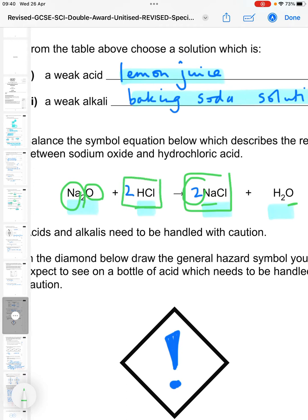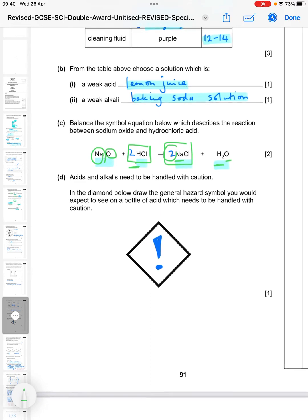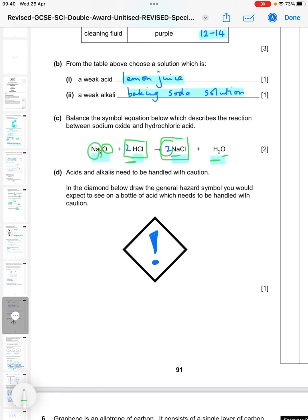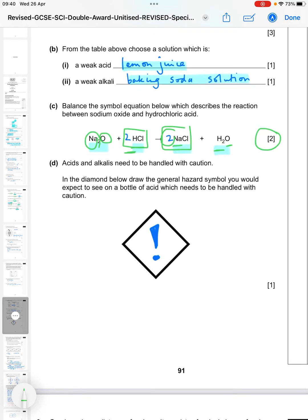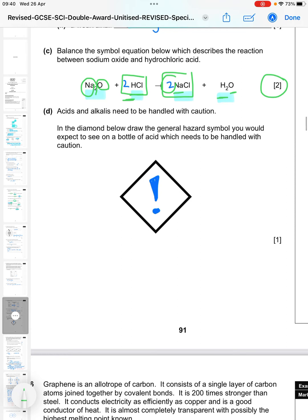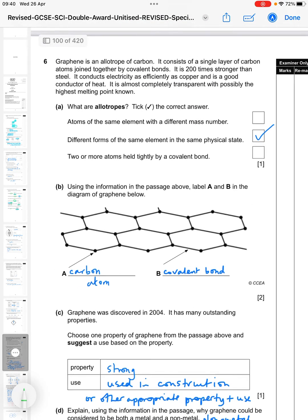That gives us two chlorines each side, and then we have two hydrogens here and two here. So that's balanced. So it's a two in front of the HCl and the two in front of the NaCl. The way that's marked, it'd be one mark for each correct number. Now acids and alkalis need to be handled with caution. In the diamond, draw the general hazard symbol you would expect to see on a bottle of acid which needs to be handled with caution. So you're looking to draw an exclamation mark in there as I have.